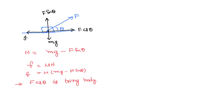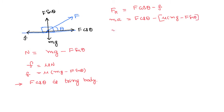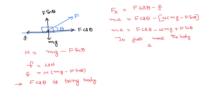If we apply a force greater than the frictional force, the body starts moving from left to right. The resultant force acting on the body is F cos theta minus the frictional force. According to Newton's second law, Ma equals F cos theta minus μ(Mg minus F sin theta). Suppose we just want to move the body without acceleration, with a certain constant velocity. Then we equate the acceleration to zero, giving F cos theta minus μMg plus μF sin theta equals zero.